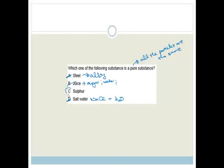The only one that's a pure substance is sulfur. How do we know that? Because it's an element on the periodic table — we find it there. So it is a pure substance.